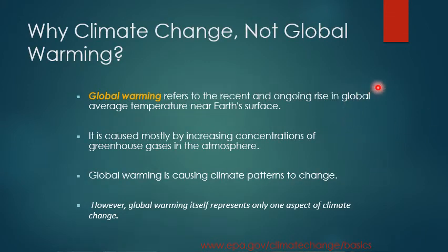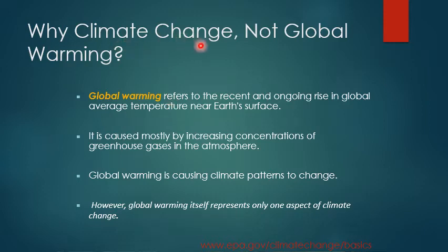Why do we say 'climate change' instead of 'global warming'? Global warming is specific — it refers specifically to the recent and ongoing rise in global average temperature, caused mostly by increasing greenhouse gases. But it's only one small piece of the puzzle, one aspect of climate change. It was arguably marketed the wrong way early on, leading people to dismiss it when they experienced severe winter storms. Understand that severe winter storms are still part of climate change — global warming is just one aspect, and climate change is much bigger than just global warming.